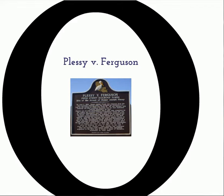In 1896, a man named Homer Plessy, who was seven-eighths Caucasian and one-eighth African descent, sat in a white-only railroad car, which was against the law because Plessy was classified as black. When Plessy refused to move to the car designated for blacks, he was immediately arrested. In the Supreme Court ruling, state laws requiring racial segregation were upheld under the doctrine of separate but equal. This means that as long as the law allows for a white section and a black section that are equal, it is fine.